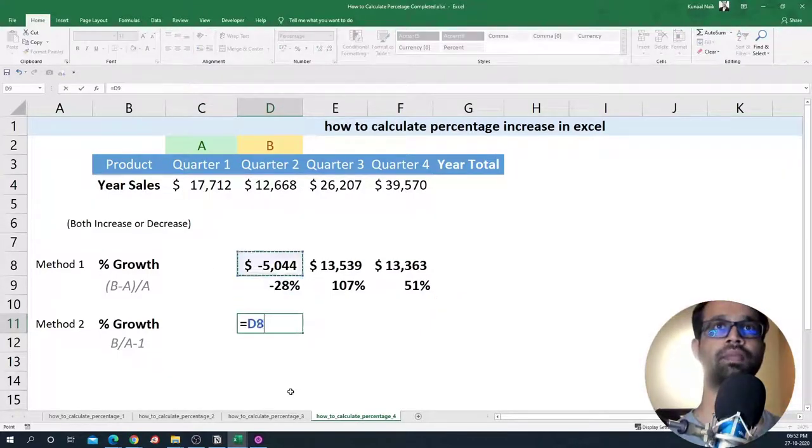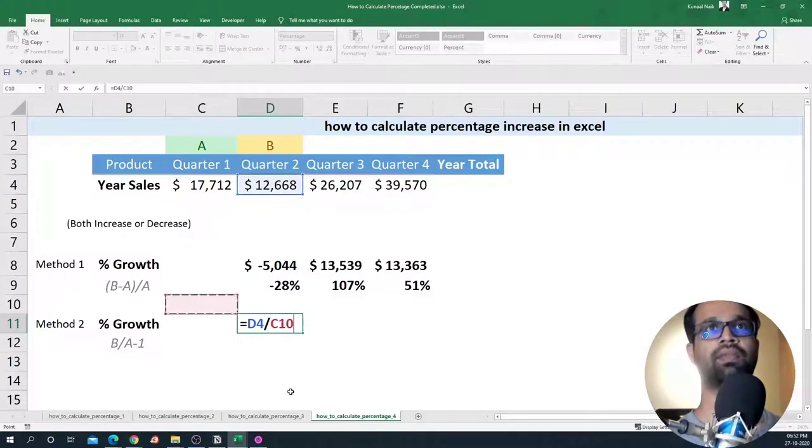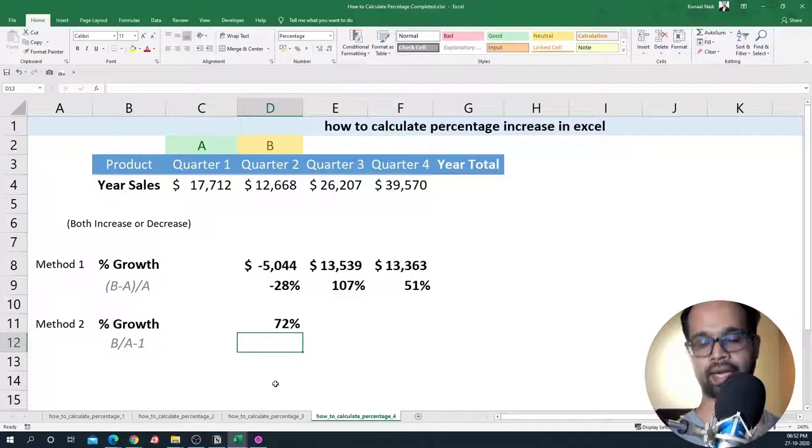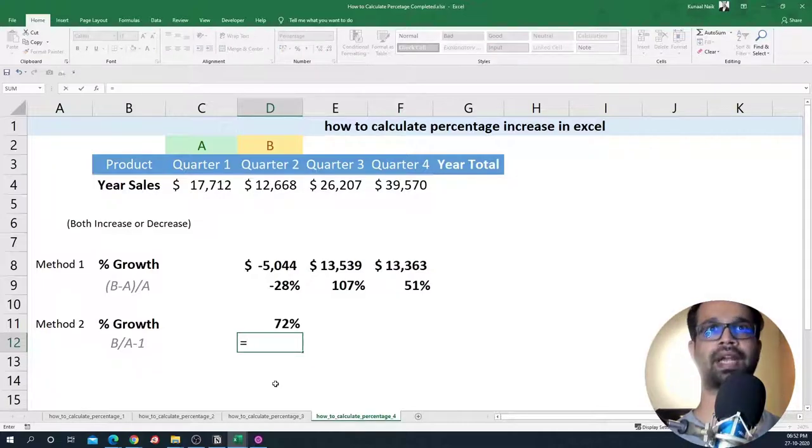So let's see how we can do that. I'm going to say quarter two divide by quarter one. Now this is going to show me that difference of how much quarter two is a percentage of quarter one, and then I will subtract from this one to get you the percentage decrease or increase.